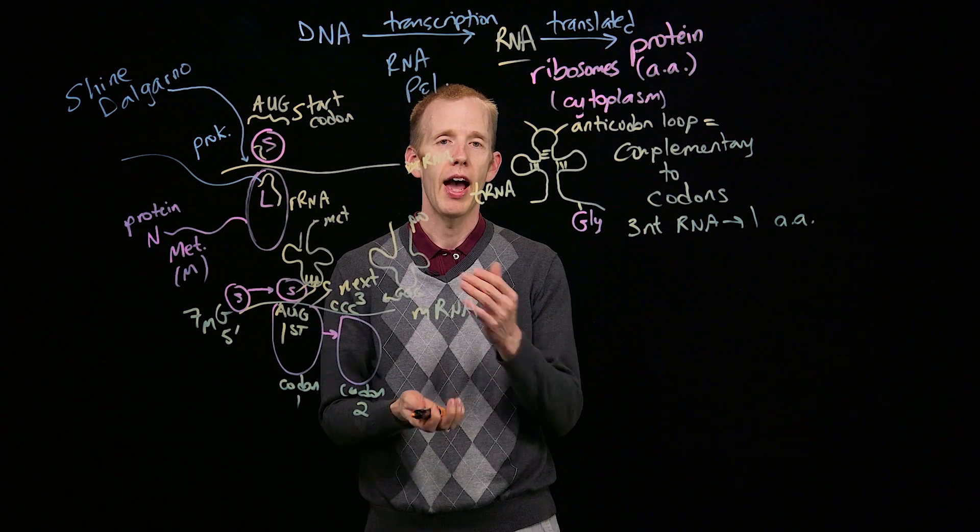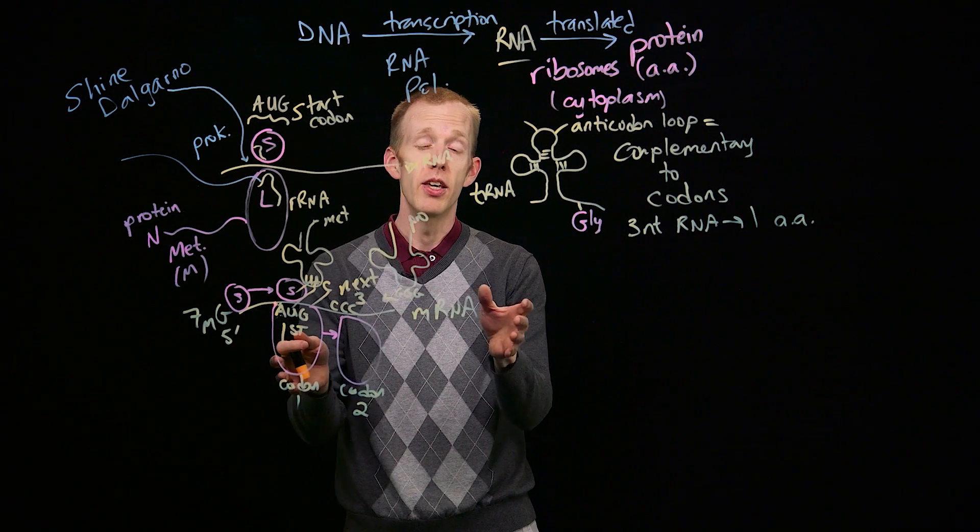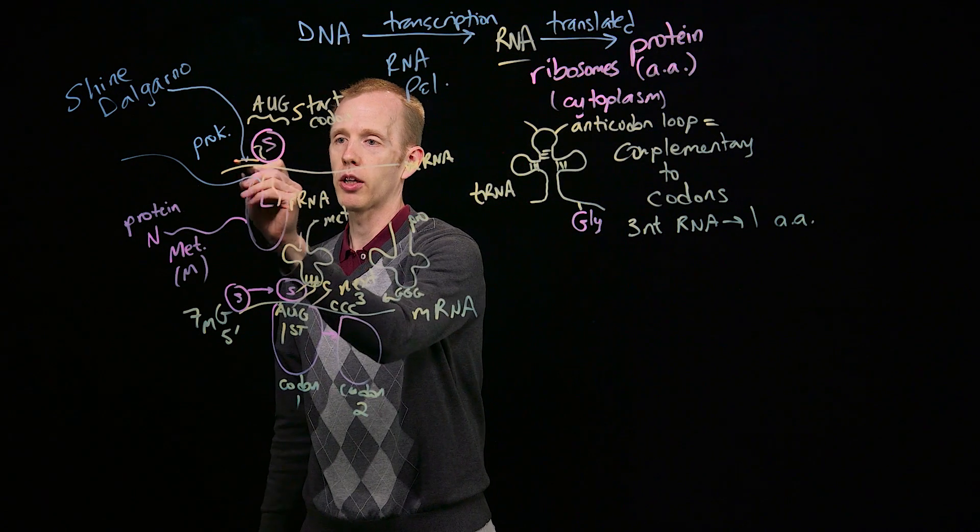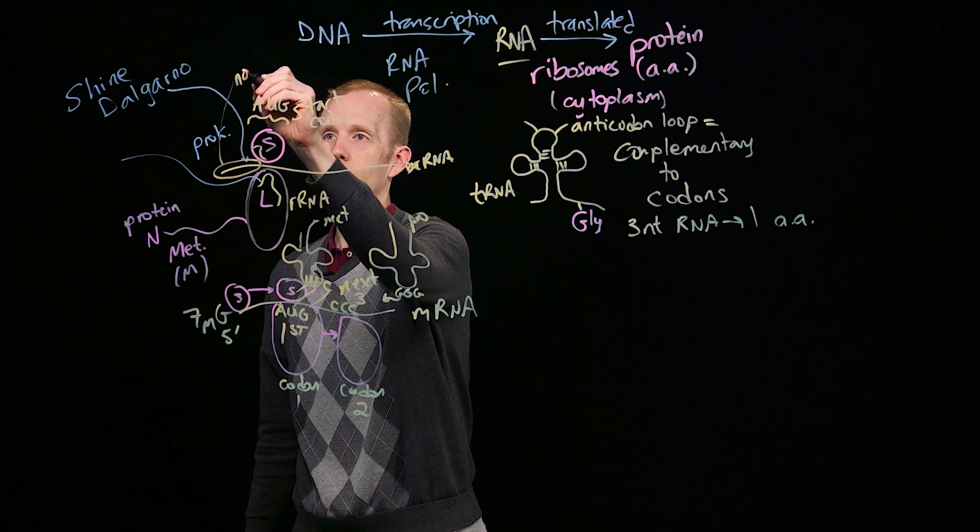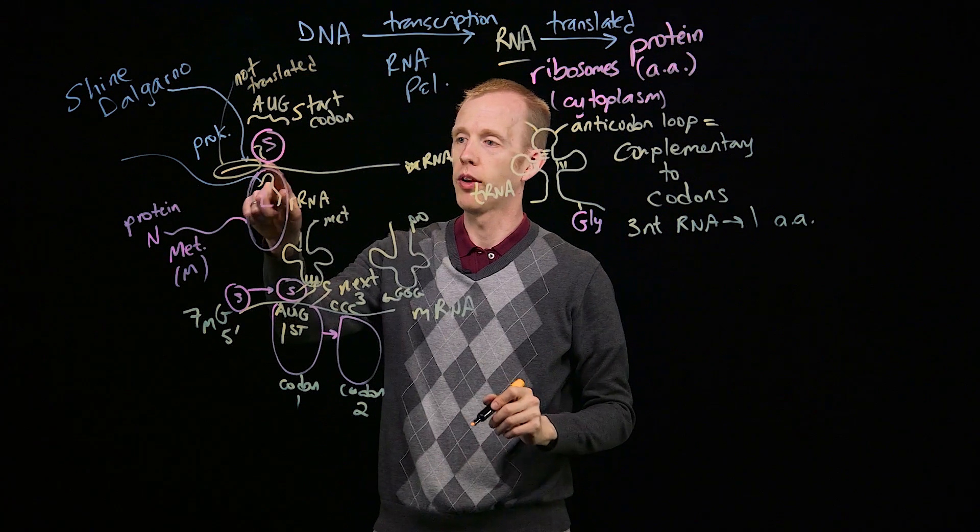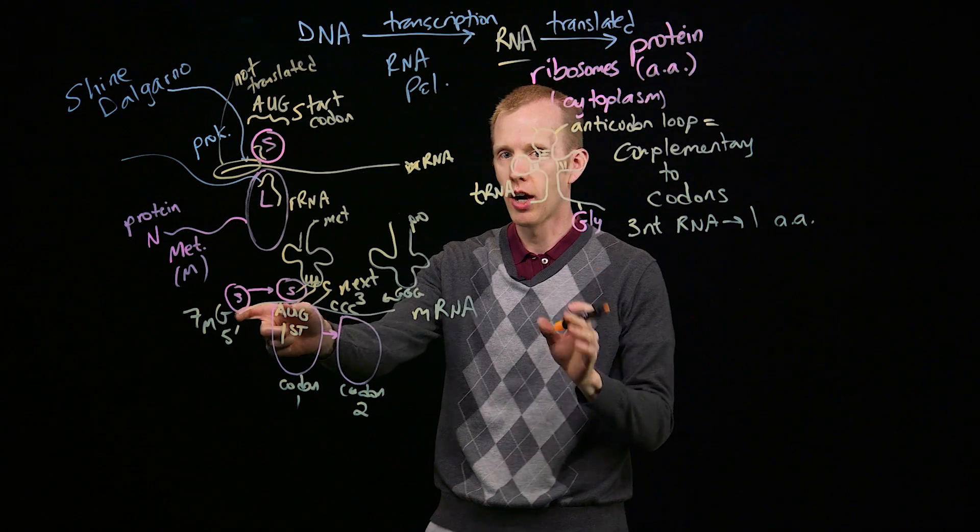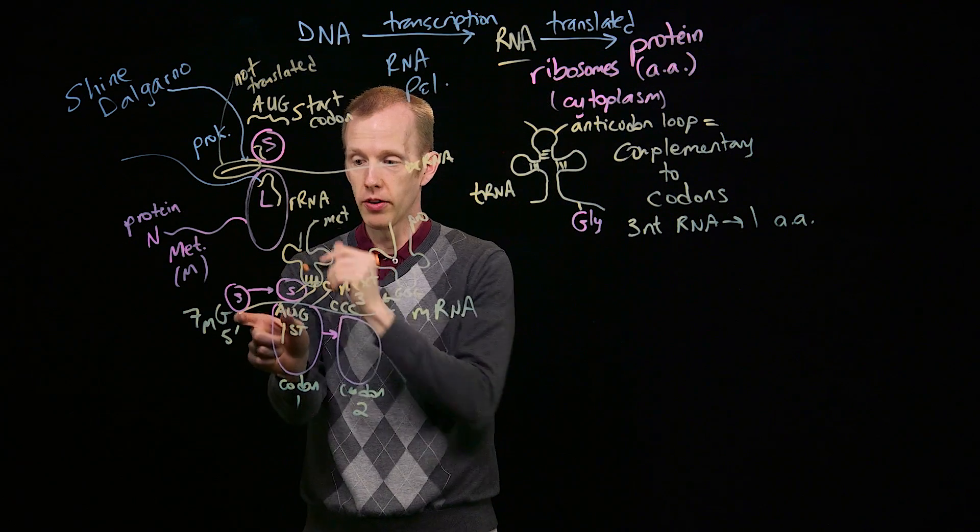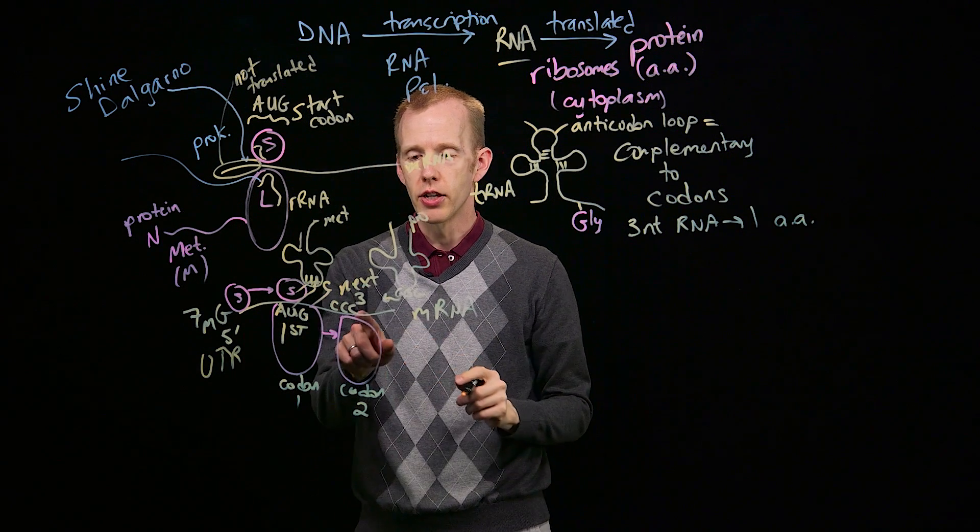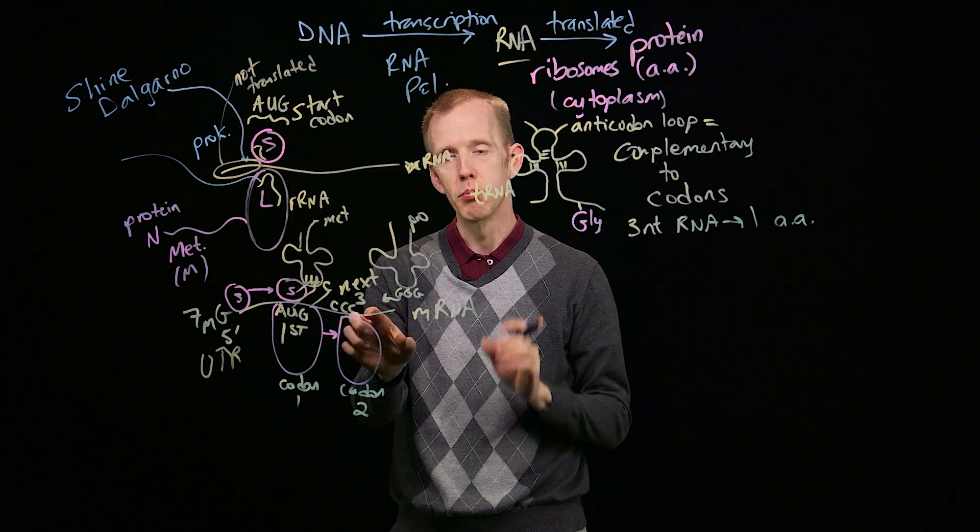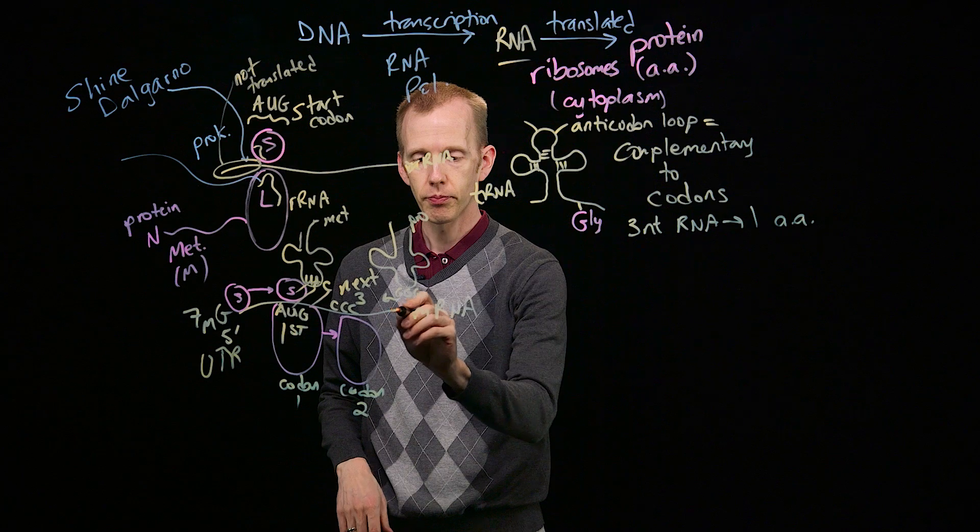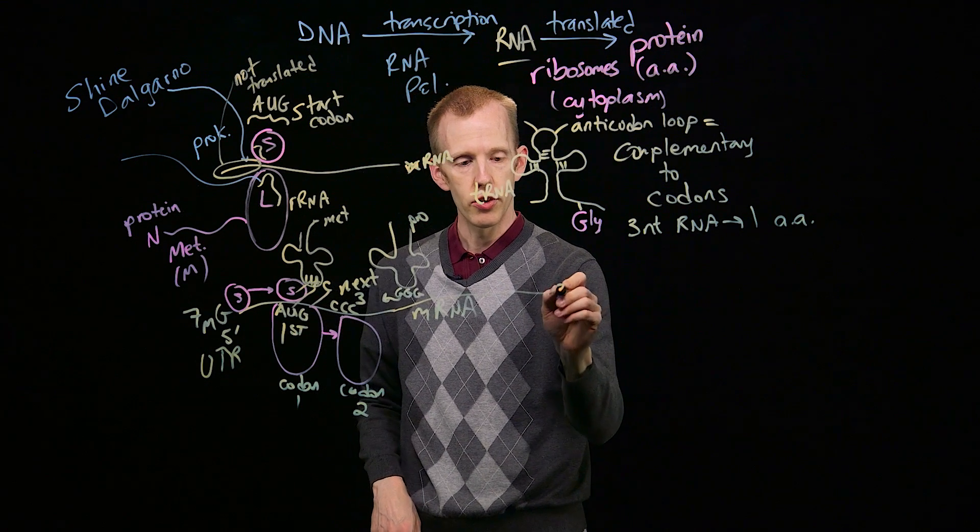So is termination, how translation stops. It turns out, the messenger RNA molecule, not only is part of the messenger RNA molecule not translated, the part between the 5' end of the molecule and the first AUG is not translated. That's called the 5' UTR, untranslated region. It's also true that translation stops before the ribosome gets to the 3' end of the messenger RNA molecule.